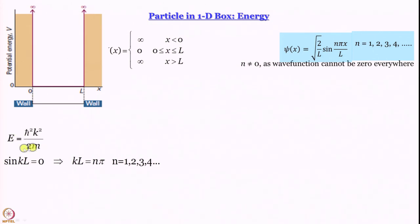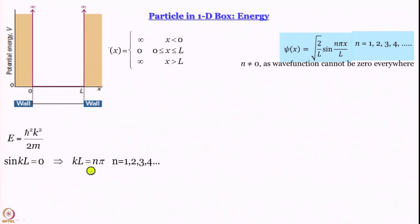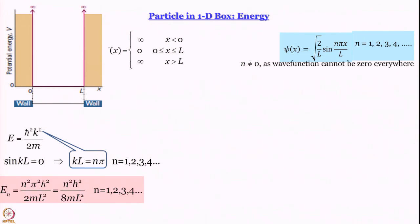Let us see how we get to the energy. The expression for energy for a free particle is E equal to h-cross squared k squared by 2m, and this is the energy our particle would have inside the box. Since psi must vanish at x equal to L, we have kL equal to n pi, where n is a positive integer. Substituting this into the free-particle energy expression gives E of n equal to n squared h squared by 8mL squared.